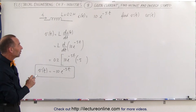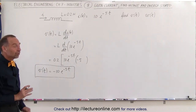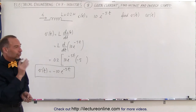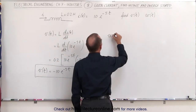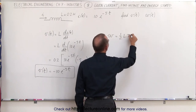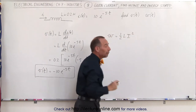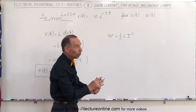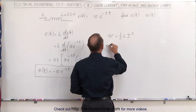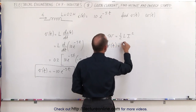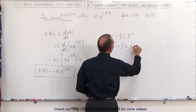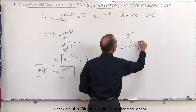Next we want to find the energy stored in the inductor. What equation do we need for that? We can calculate the energy stored as equal to one-half the inductance times the current squared. In this case, we don't want the final current squared — we want the current as a function of time — which means the energy stored as a function of time is equal to one-half times the inductance times the current as a function of time, quantity squared.